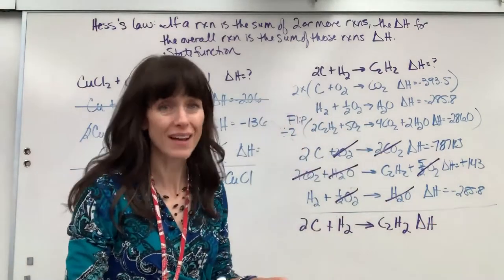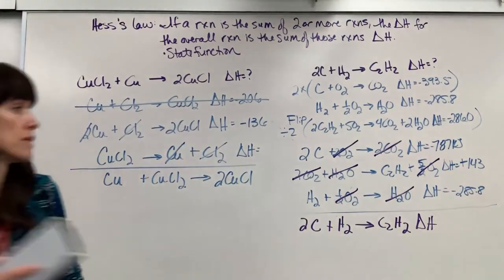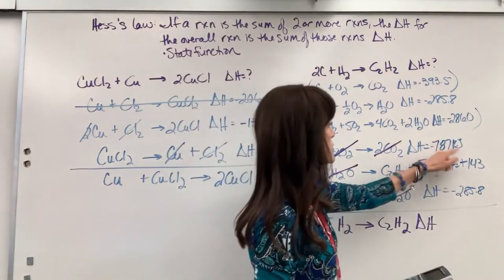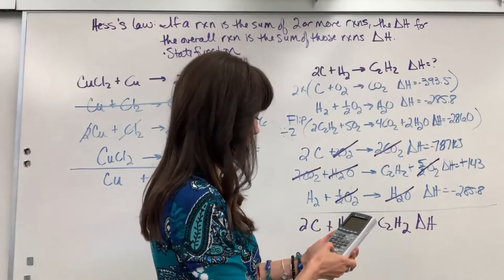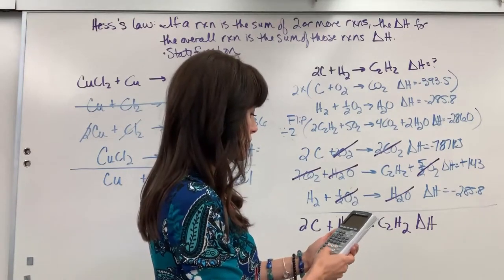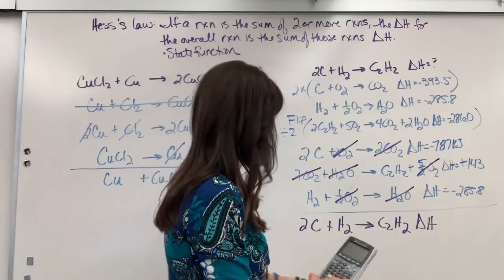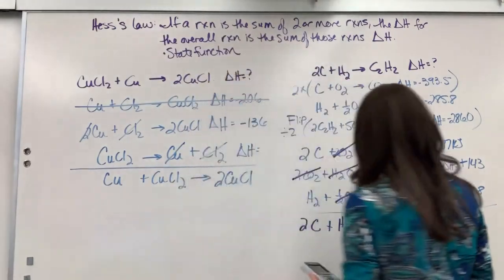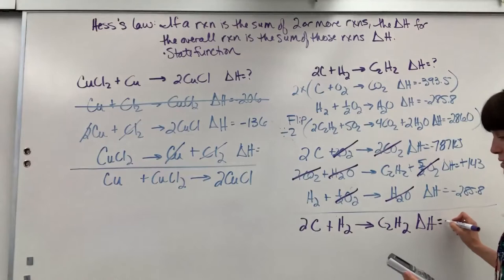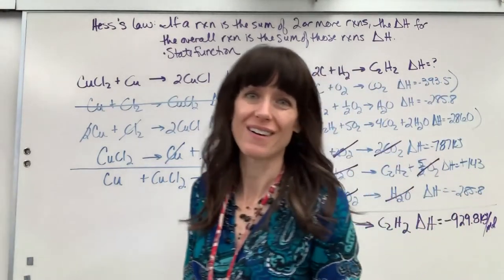We did all of that to get the delta H. So let's see what we've got here. All we have to do is add up those three numbers. So we're going to have negative 787 plus 143 plus our negative 285.8. And that tells us, wow, this is pretty good. For this reaction, delta H is negative 929.8 kilojoules per mole. We found delta H.